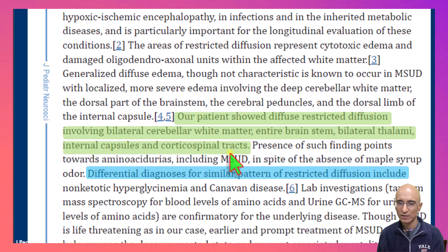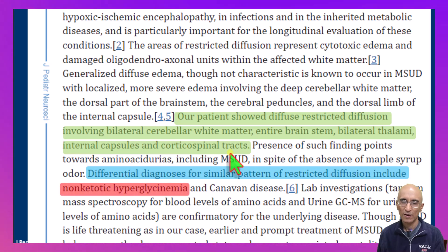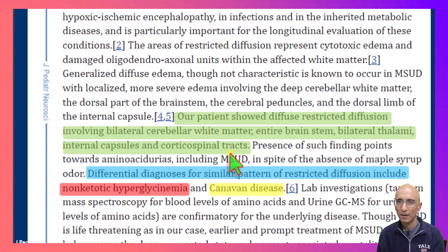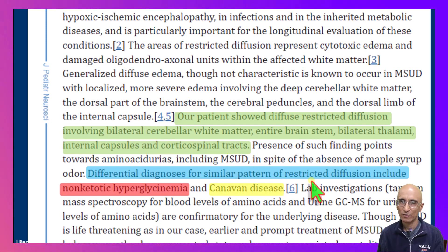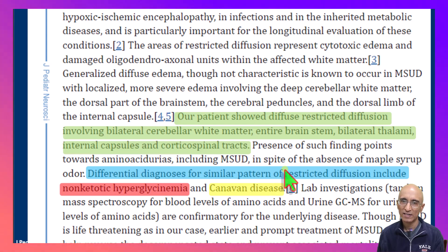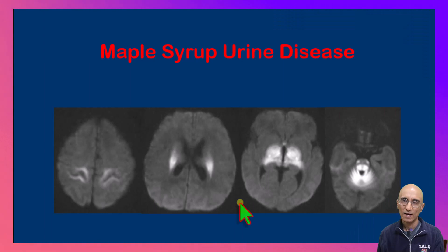The differential diagnosis is pretty narrow. Other things to consider would be non-ketotic hyperglycemia and Canavan's disease. Based on the imaging appearances and laboratory investigations, we can diagnose maple syrup urine disease, particularly in the setting of restricted diffusion in the myelinated regions with elevated amino acids in the blood. I hope you found this video to be useful. Thanks for your attention.